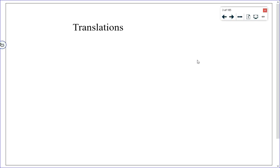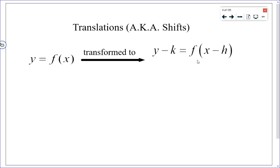We're going to start off with translation. A translation is a shift of a point or an entire function left or right and/or up or down. In the function, we create a translation by changing y equals f(x) to y minus k equals f(x minus h). So x is replaced with x minus h, and y is replaced with y minus k.